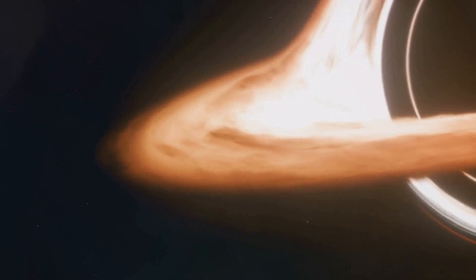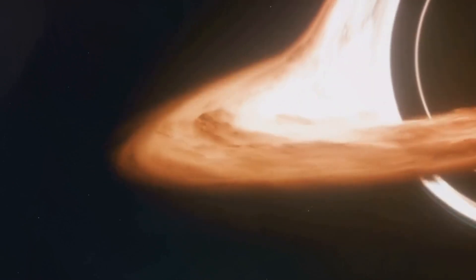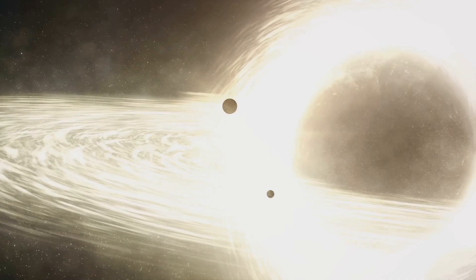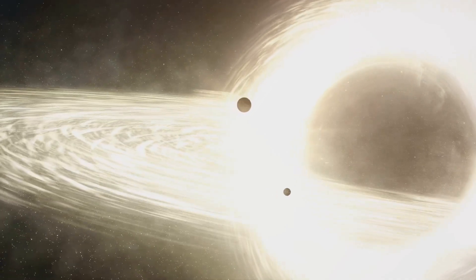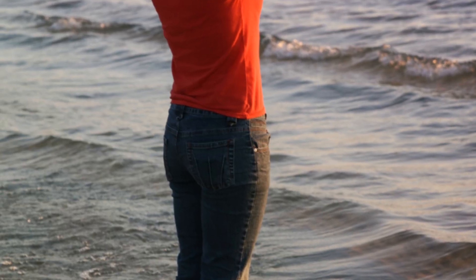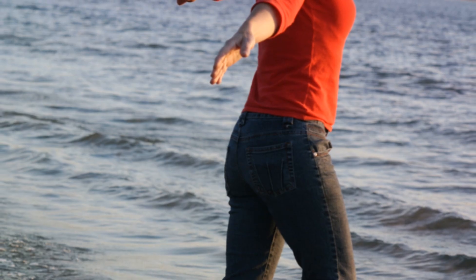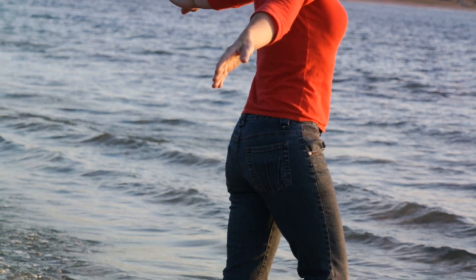Now, the event horizon isn't a physical barrier. You wouldn't hit a wall or bounce off a force field. It's a line drawn by gravity. From a distance, you wouldn't even know you've crossed it. But the moment you do, the black hole's gravity becomes inescapable. So what happens then?